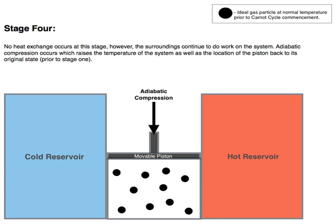When the Carnot cycle is plotted on a pressure-volume diagram, the isothermal stages follow the isotherm lines for the working fluid, the adiabatic stages move between isotherms, and the area bounded by the complete cycle path represents the total work that can be done during one cycle.